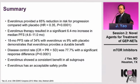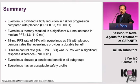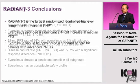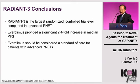In summary, RADIAN-3 demonstrated that everolimus provided a 65% risk reduction for progression compared to placebo in pancreatic neuroendocrine tumors — a significant 6.4-month increase in PFS. The 18-month progression-free survival rate demonstrates these benefits are durable, with consistent benefit across subgroups and an acceptable safety profile. RADIAN-3 is the largest randomized study ever completed in pancreatic NETs, with a 2.4-fold increase in median progression-free survival. We can now add everolimus as part of the standard of care for patients with advanced pancreatic NETs.